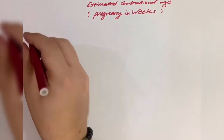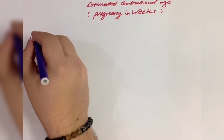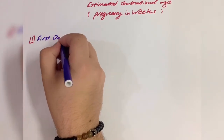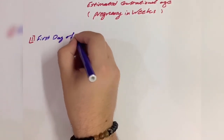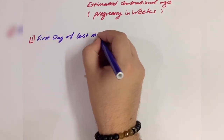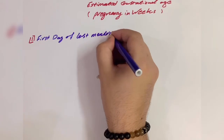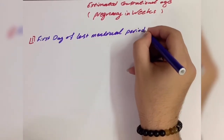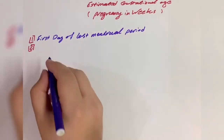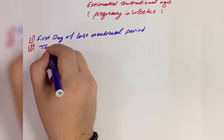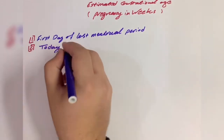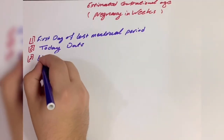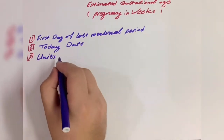In order to do that, we will need three things. First, we need the first day of the last menstrual period. Second, we will need today's date. And third, we need to understand the units.